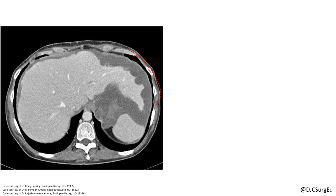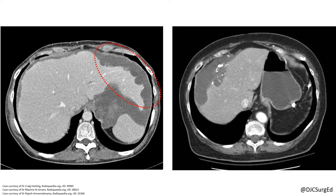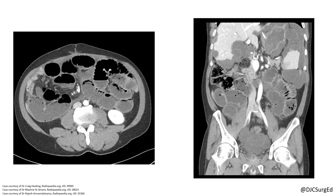PMP has a classic appearance on CT, as intraabdominal mucin causes scalloping of the liver, spleen edges, and mesentery, and can have intermittent calcifications. In more aggressive cases, segmental obstruction of the small bowel is also seen.